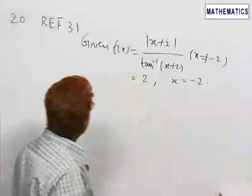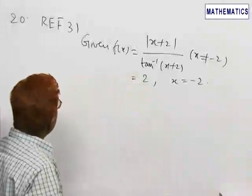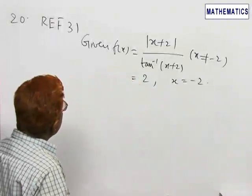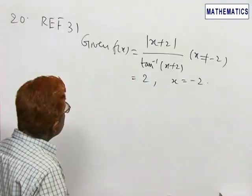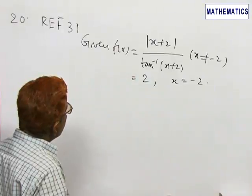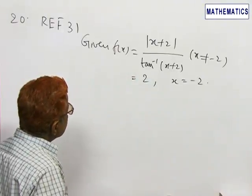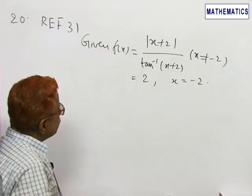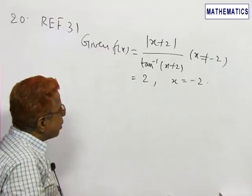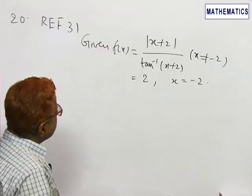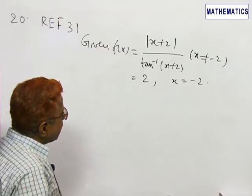The next two problems refer to problem number 31. We are given f(x) is equal to |x+2| / tan⁻¹(x+2) when x is not equal to minus two, and f(x) = 2 when x is equal to minus two.